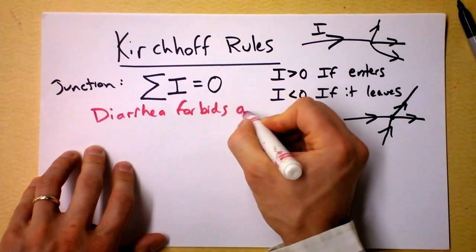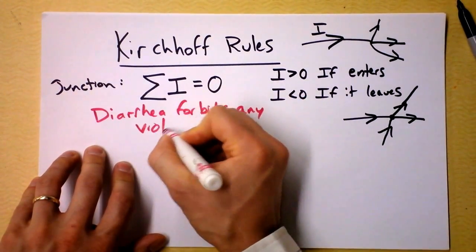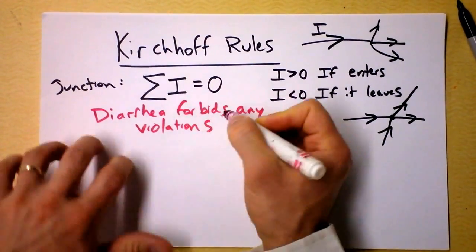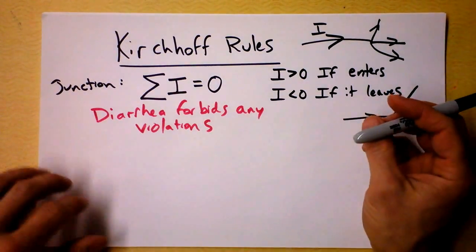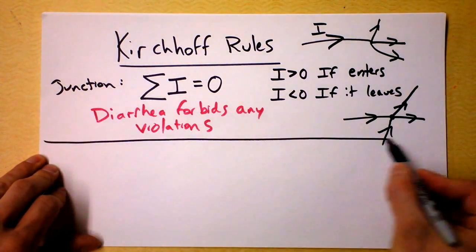You'll have charge pooling up at that junction. And by continuity, it is not possible. You know that there must be a steady flow through. So really, Kirchhoff's junction rule is simply a statement of the conservation of charge.